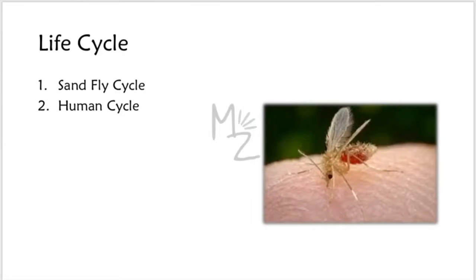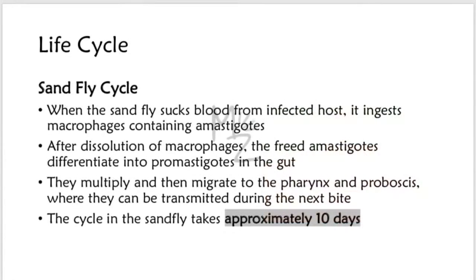The life cycle of Leishmania has two stages: the sandfly cycle and the human cycle. Sandfly cycle: when the sandfly sucks blood from an infected host, it ingests macrophages containing amastigotes. After dissolution of macrophages, the freed amastigotes differentiate into promastigotes in the gut. They multiply and then migrate to the pharynx and proboscis, where they can be transmitted during the next bite. The cycle in the sandfly takes approximately 10 days.